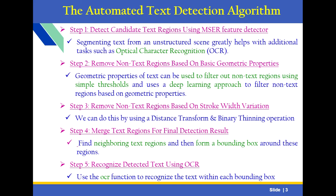Step 3: Remove non-text regions based on stroke width variation. We can do this by using a distance transform and binary thinning operation. Step 4: Merge text regions for the final detection result. For that, we are going to find neighboring text regions and then form a bounding box around these regions.